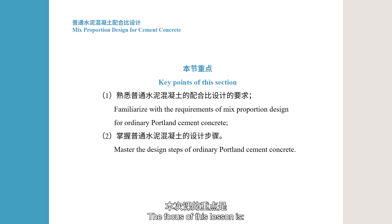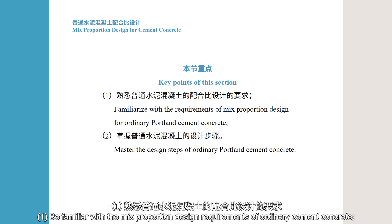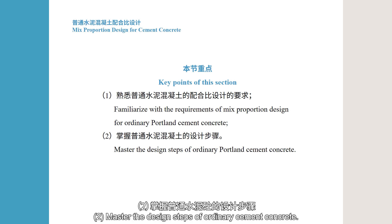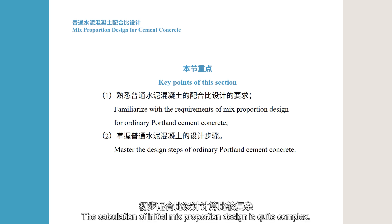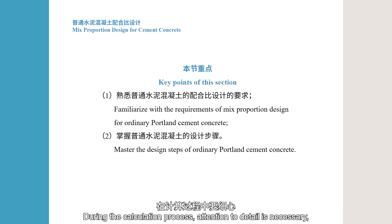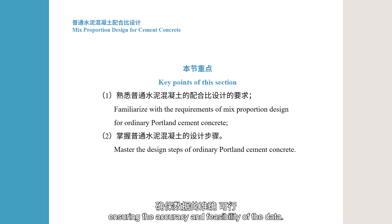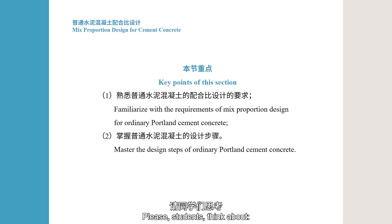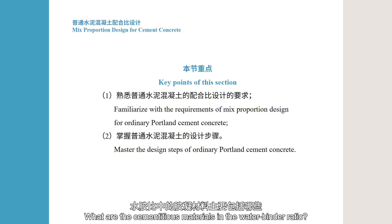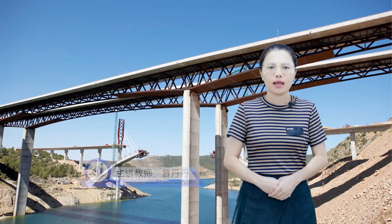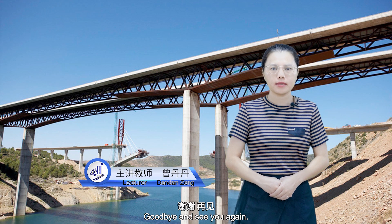The focus of this lesson is: 1. Be familiar with the mix proportion design requirements of ordinary cement concrete. 2. Master the design steps of ordinary cement concrete. The calculation of initial mix proportion design is quite complex; attention to detail is necessary. Understanding and fully grasping the meaning of each symbol and numerical value, and ensuring the accuracy and feasibility of the data, is important. It is hoped that through this lesson you can grasp the correct methods. Please think about: what are the cementitious materials in the water-binder ratio? Thank you for listening attentively to this micro-lesson. Goodbye, and see you again.